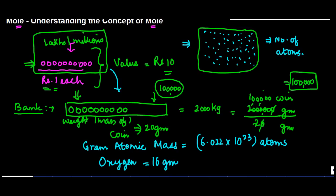This basically means that 16 grams of oxygen is equal to one mole of oxygen atom. Now what does this mole stand for? This mole basically is nothing but a group or collection.